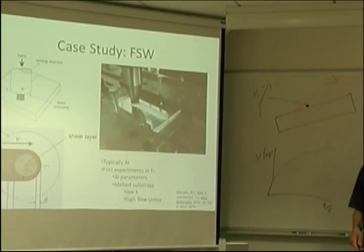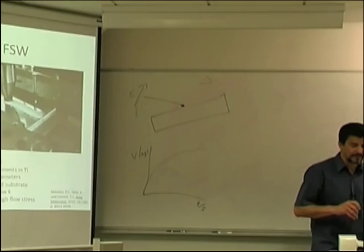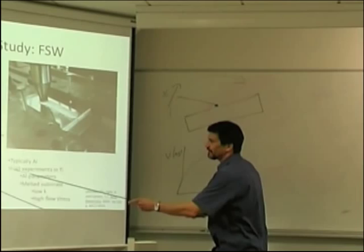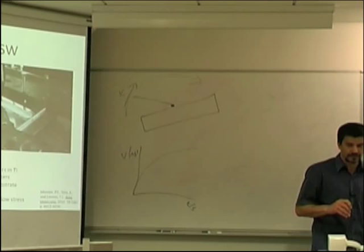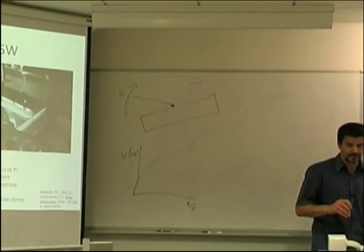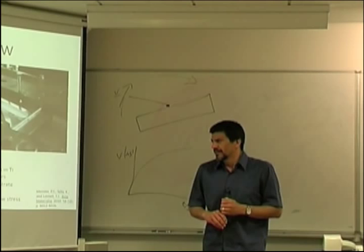As it rotates, it generates this hot area around that is soft and very severely plastically deformed and recrystallized and lots of interesting things. And as it translates, all this deformed area that used to be two different plates become one. So, you typically do it in aluminum because you can use a steel tool, this pin here can be made out of steel. It worked incredibly well, it's used for aerospace applications, many good things.